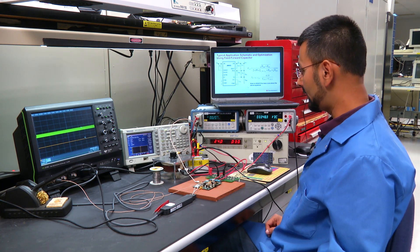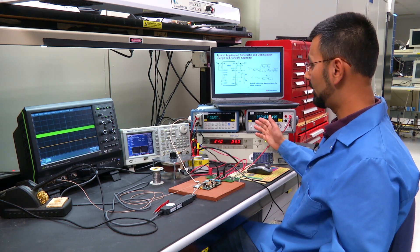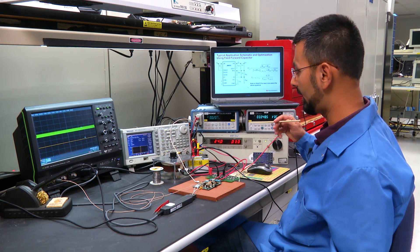So for now let's see what the load transient of 200 milliamps to 2 amps will get us.